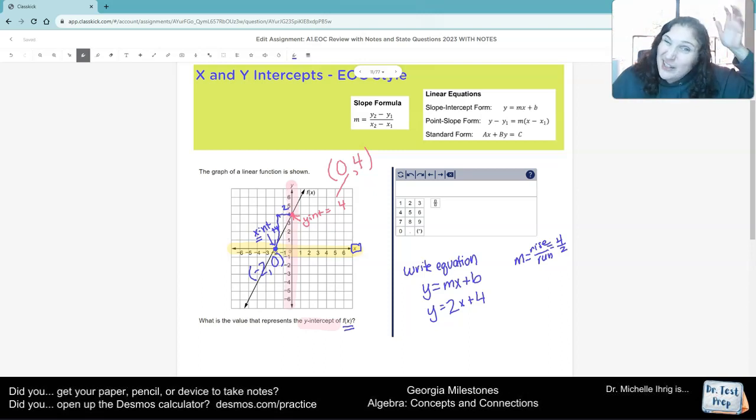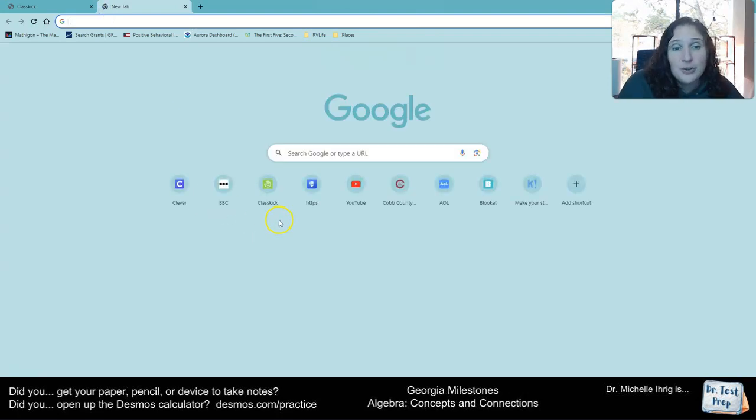Now, if you're not good at knowing if it's 0, 4 or 4, 0 or something like that, once you create this equation, you could go into Desmos and type it in. I'll just show you real quick.